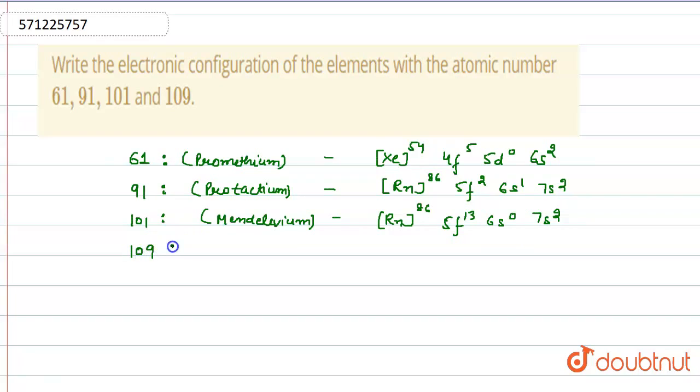Next, we have 109, name of this is Meitnerium. This is also part of actinoid series with 14 electrons in the f-subshell, 7 electrons in the d-subshell and 2 electrons in the outer shell.